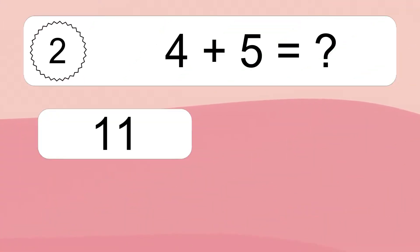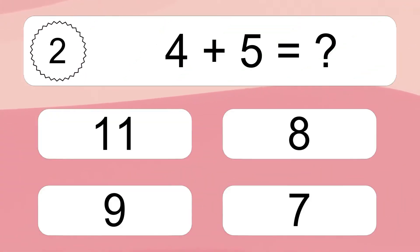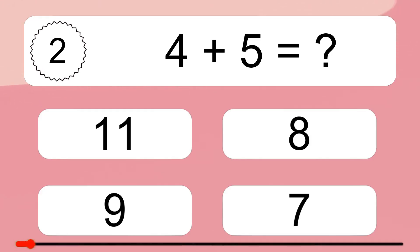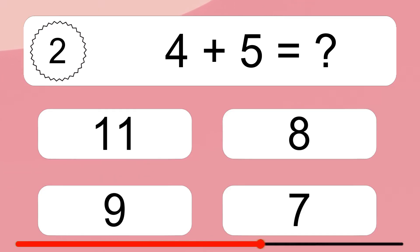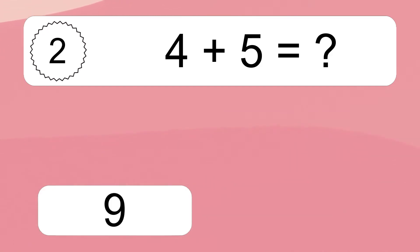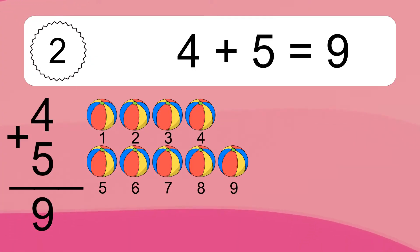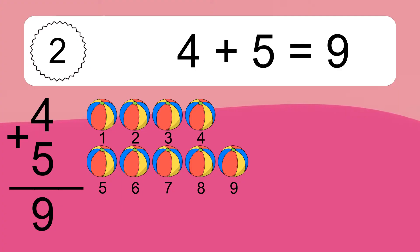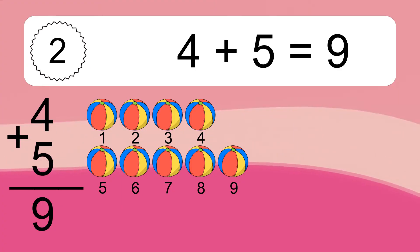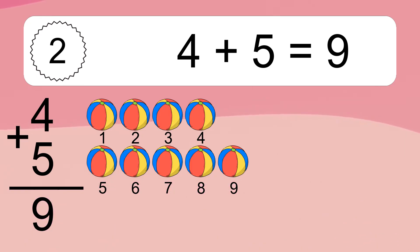4 plus 5 equals what? 4 plus 5 equals 9. Let's count it: 1, 2, 3, 4, 5, 6, 7, 8, 9.